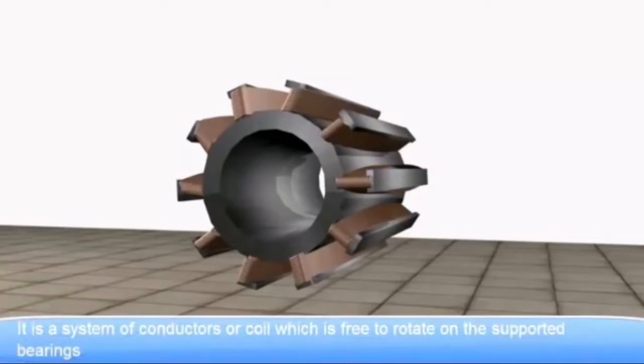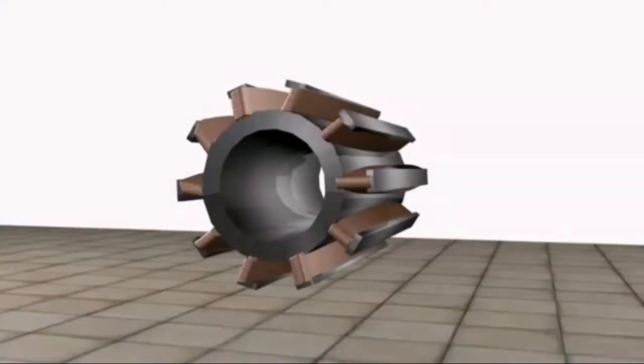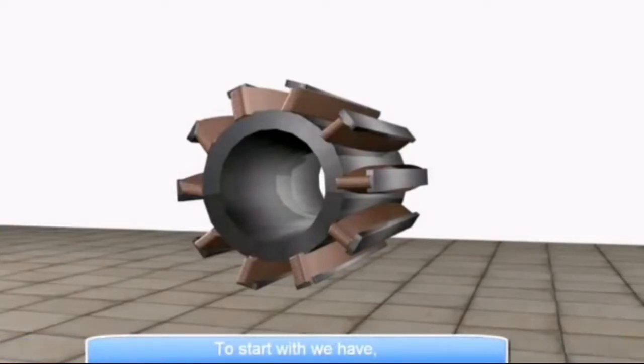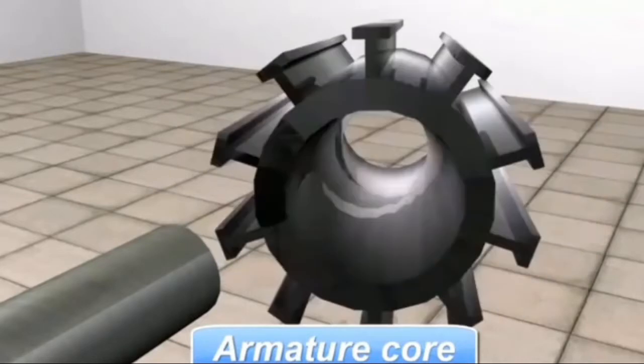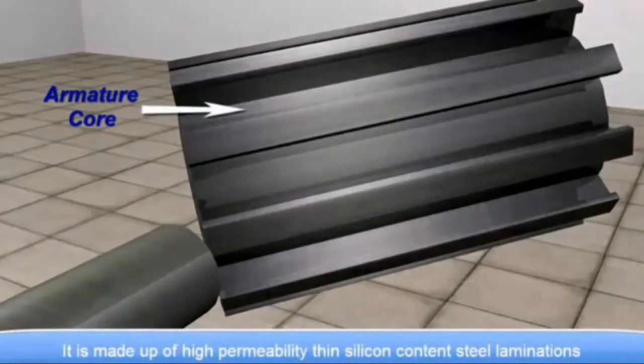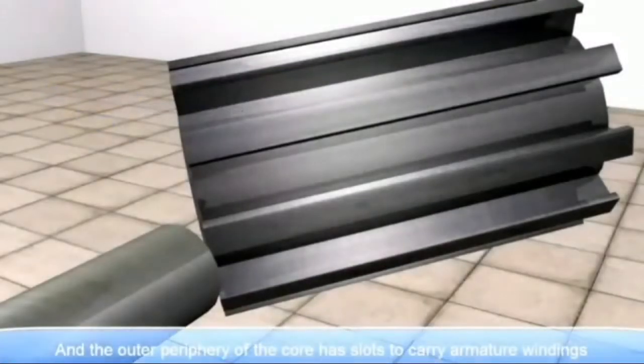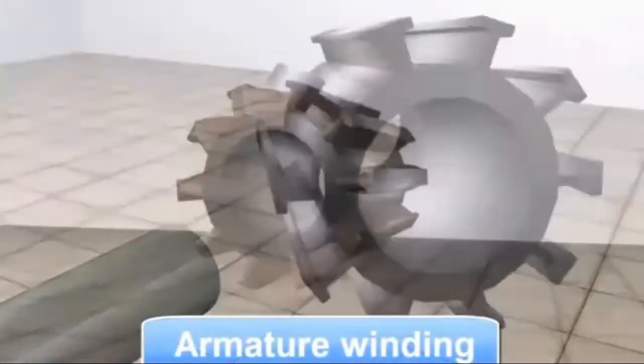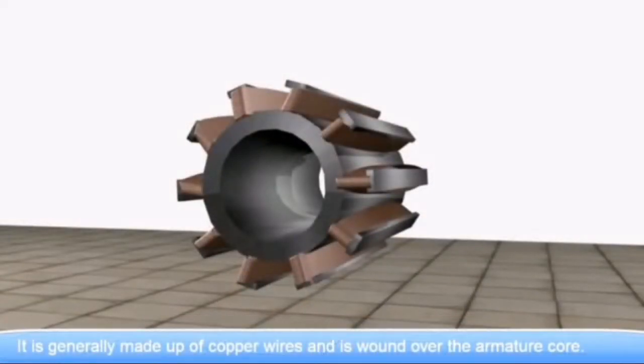Armature. It is a system of conductors on a core which is free to rotate on the supported bearing. The armature consists of various parts. The armature core is made up of high permeability thin silicon content steel laminations. In the outer periphery of the core has slots to carry armature windings. Armature windings are generally made up of copper wire and wound over the armature core.